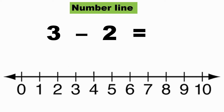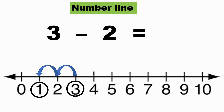What is three minus two? Students, tell me which is the first number. Yes, three is the first number, so I start from three. Which side will I move — right or left? Yes, left. I move two places to the left: one, two. I jump two times and come to one. So three minus two is equal to one.